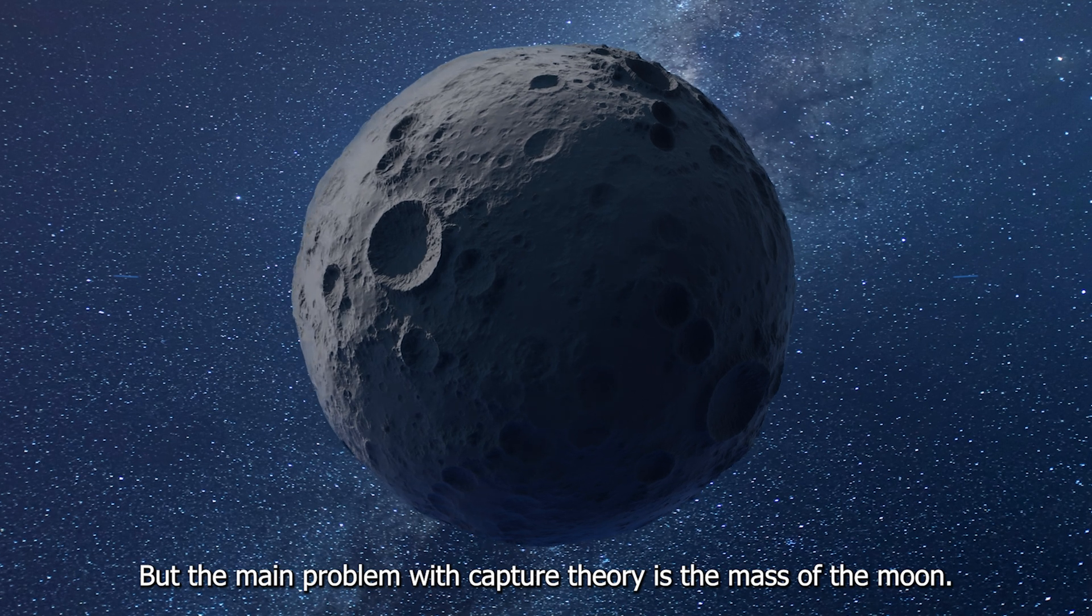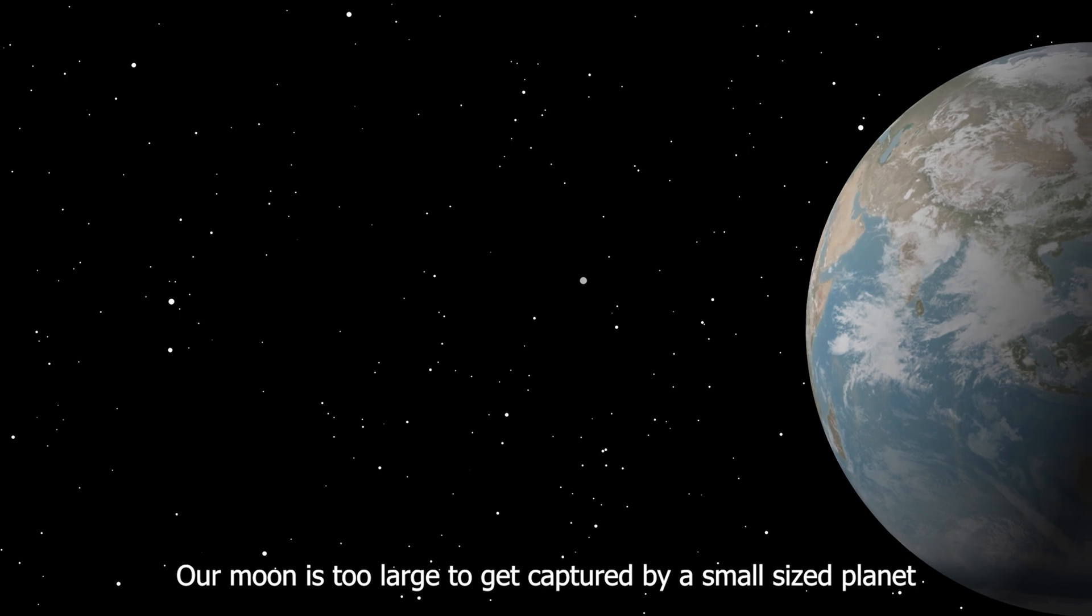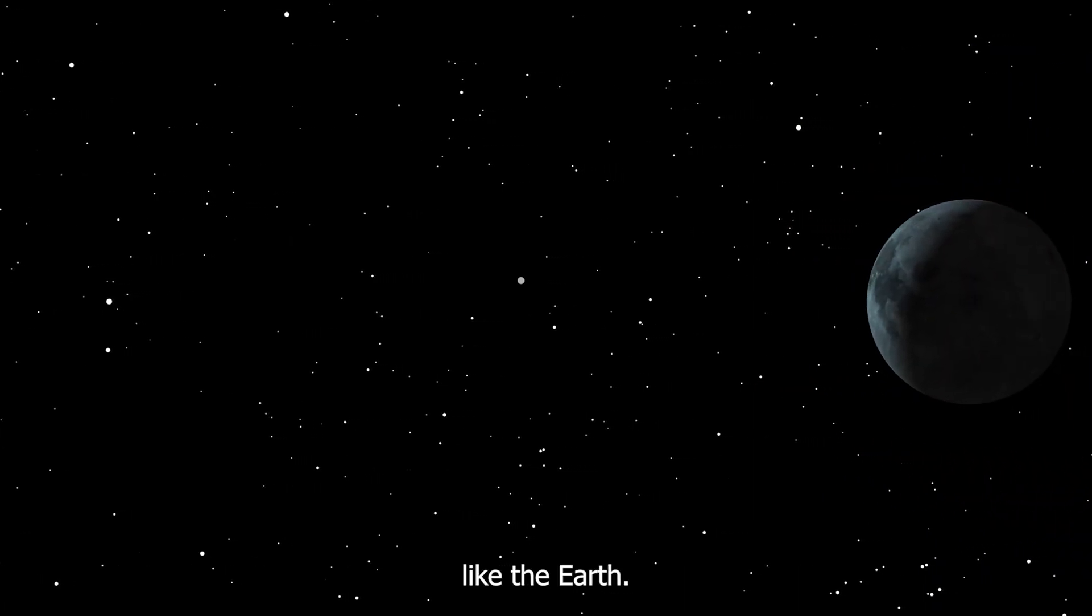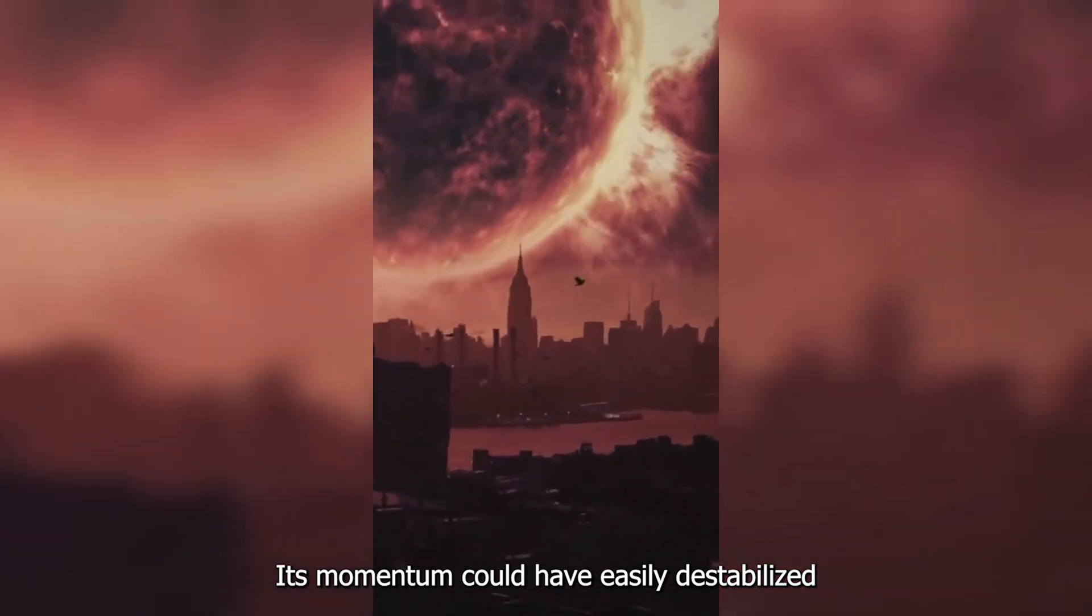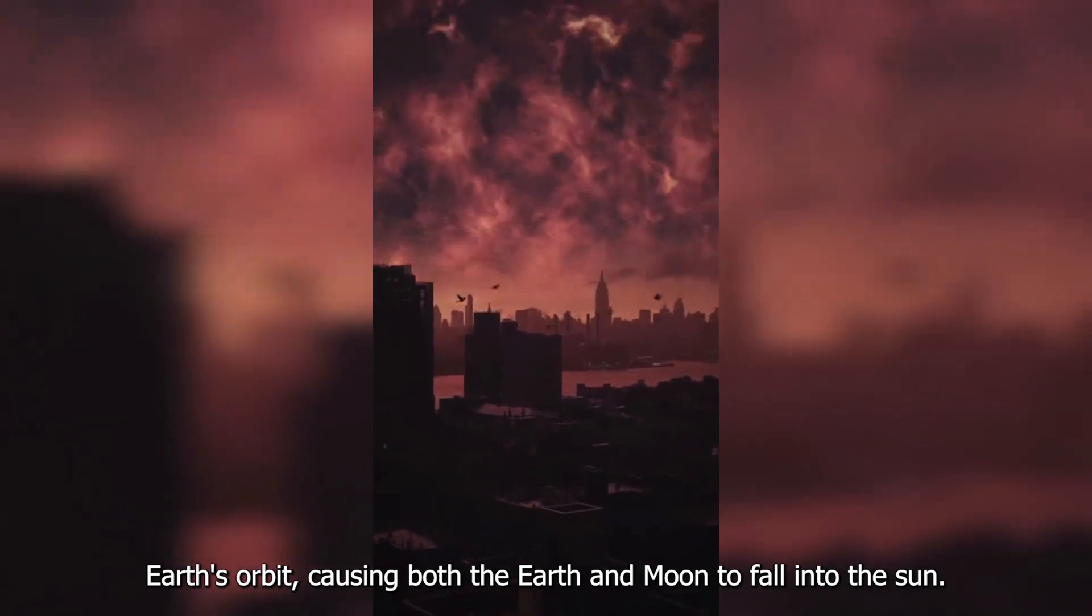But the main problem with capture theory is the mass of the Moon. Our Moon is too large to get captured by a small-sized planet like the Earth. Its momentum could have easily destabilized Earth's orbit, causing both Earth and Moon to fall into the Sun.